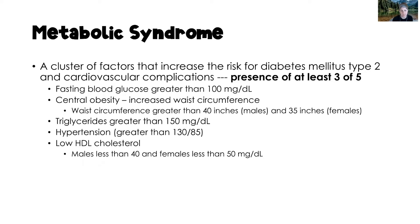The first factor is a fasting blood glucose greater than 100 — meaning nothing eaten for the eight hours prior to the blood test, and we want that glucose level to be less than 100. Central obesity is defined as an increased waist circumference: greater than 40 inches in males and greater than 35 inches in females. Triglycerides higher than 150 milligrams per deciliter also contributes to metabolic syndrome.